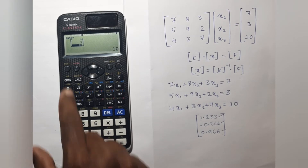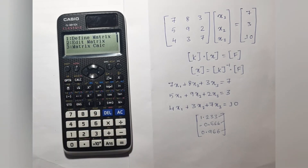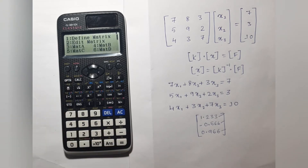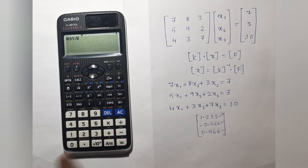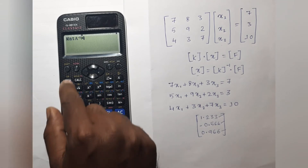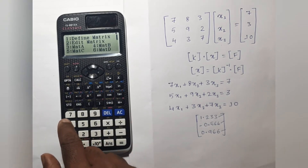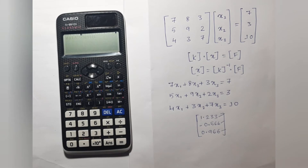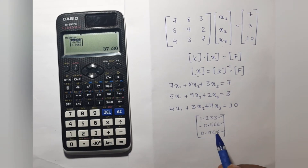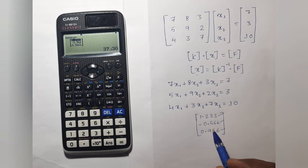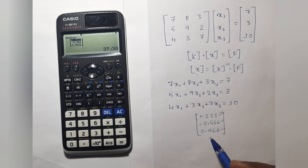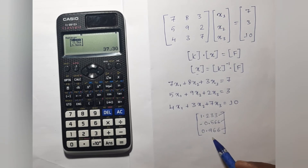Then go to Options and select Matrix Calculation. Select the option for matrix A inverse multiplied by matrix B. You will get the answer: 1.2, -0.56, and 0.96.